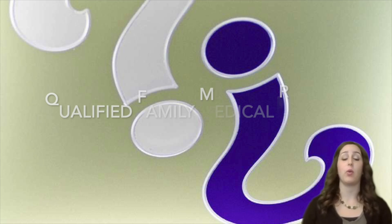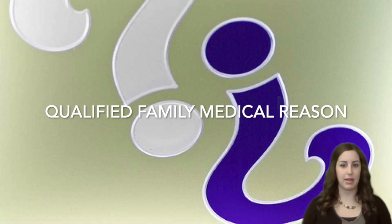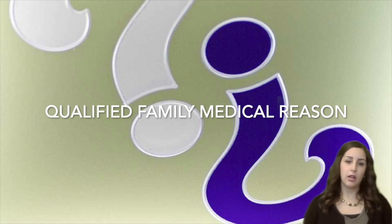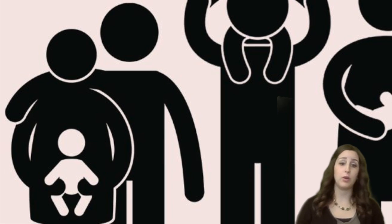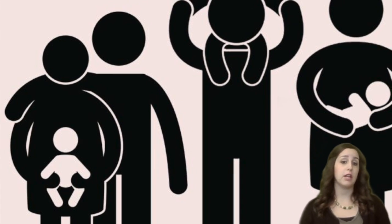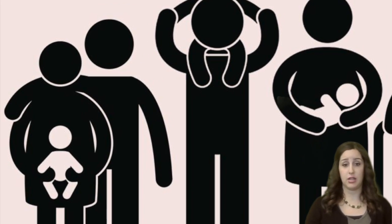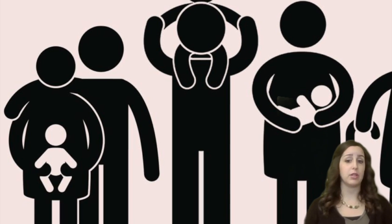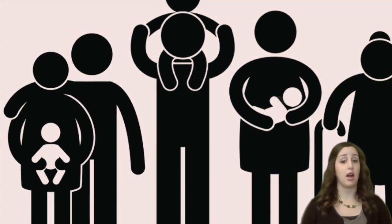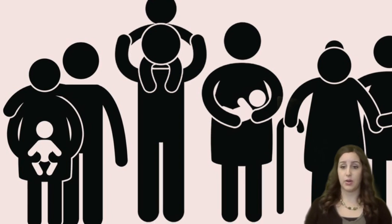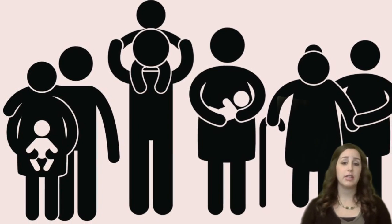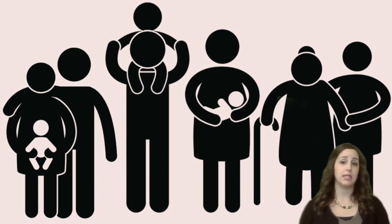FML protects an employee when they need to take time off due to a qualified family or medical reason. An employee can take time away from work for one or more of the following reasons: for the birth and to care for a newborn child; to care for a newly placed child through adoption or foster care; to care for an immediate family member with a serious health condition — and family member here refers to a spouse or domestic partner, a child, or a parent; in-laws are not covered by FML; to care for themselves due to their own serious health condition, otherwise known as a medical or disability leave; and finally for military leave, military exigency leave, or military caregiver leave.